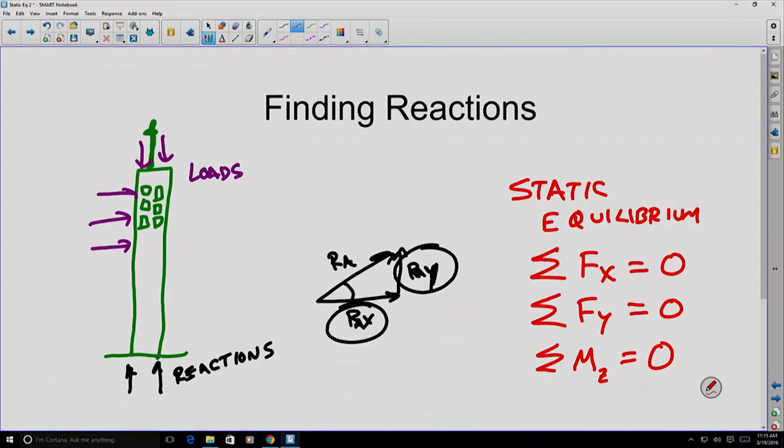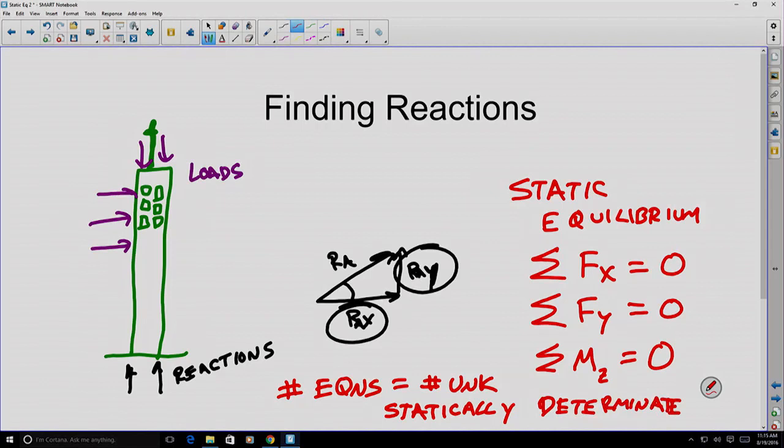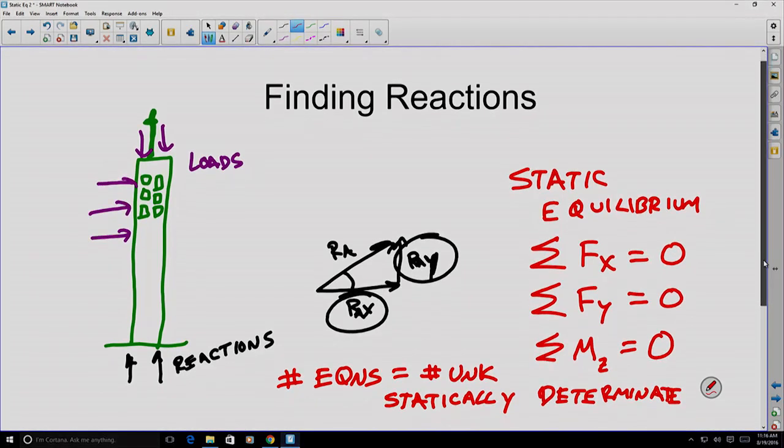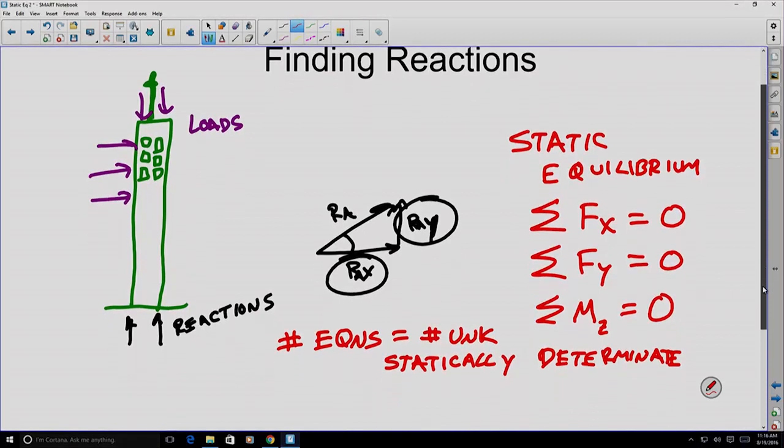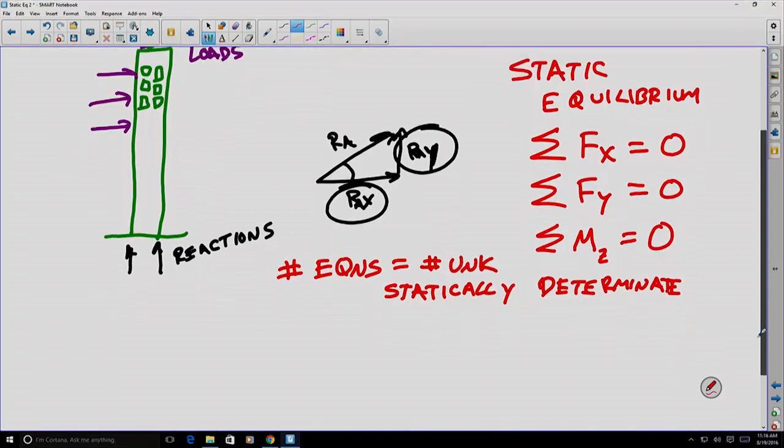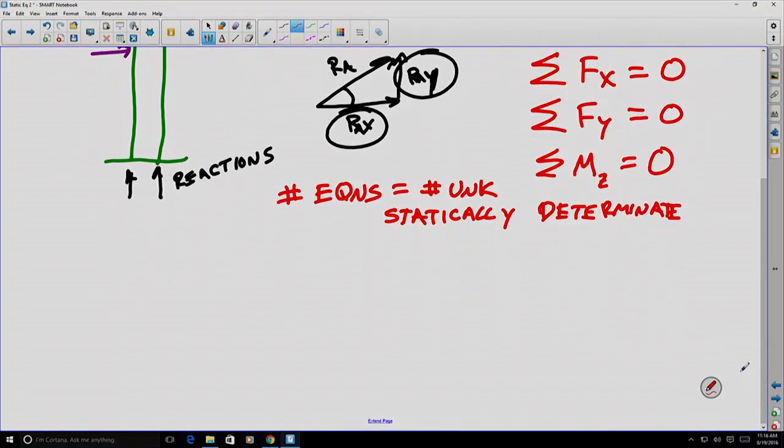If the number of equations we have is equal to the number of unknowns, then we have a system that is known as being statically determinate. If we're looking at a problem where we know some loads and some reactions, we're going to use a strategy to solve problems like this.